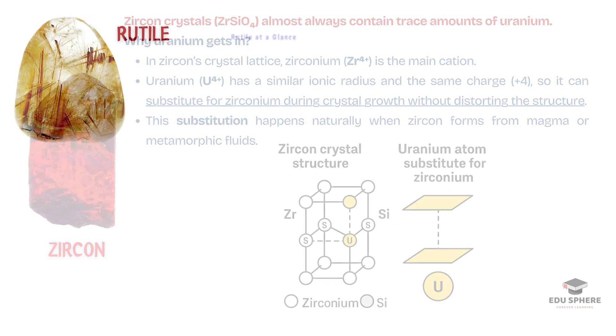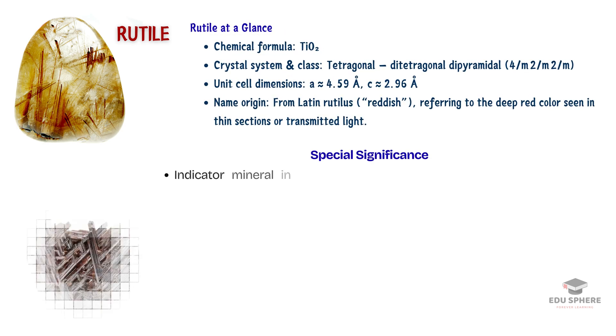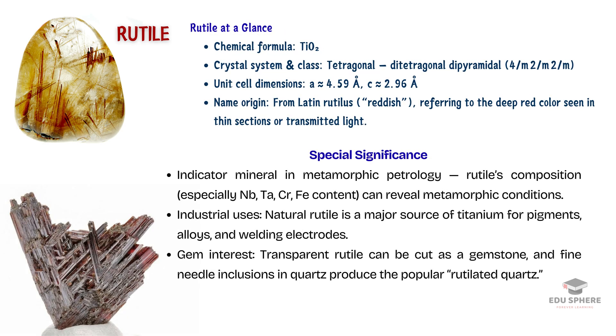Another key tetragonal mineral is rutile. You might not have heard of it, but you see it every day. When ground into a fine powder, rutile becomes a brilliant non-toxic white pigment. It's what makes paint, paper, plastics and even some foods look bright white.